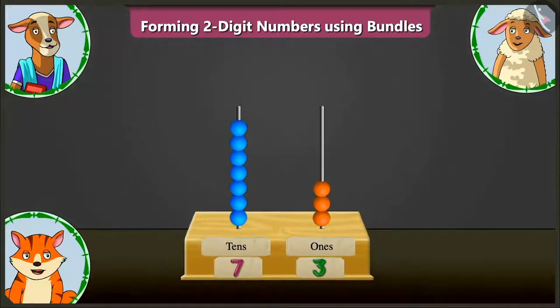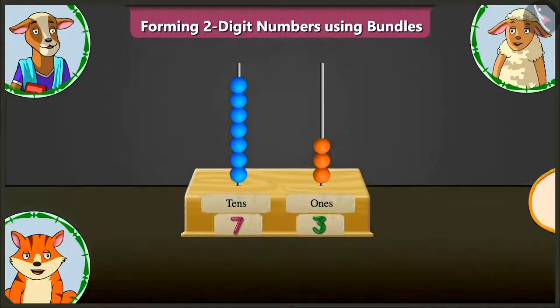Well done. Now, here, in the tens box, seven tens means seventy. And in the ones box, three ones means three. So, adding seventy and three makes it number seventy-three. Absolutely correct.